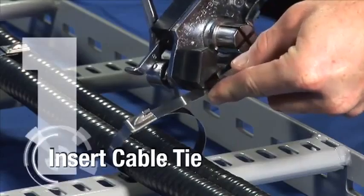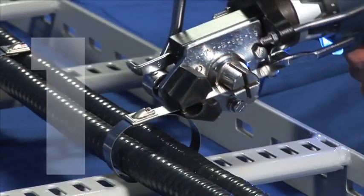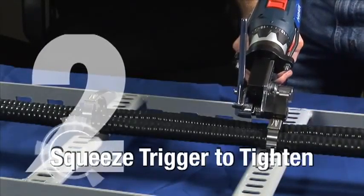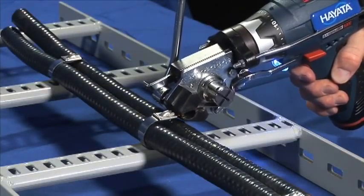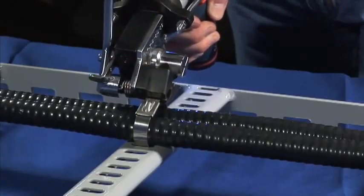First, insert the cable tie end into the nose of the installation tool. Second, squeeze the trigger to tighten. The BT12000 will automatically tighten the cable tie to the optimum tension.